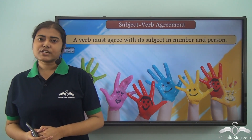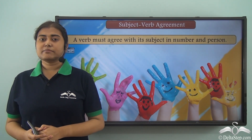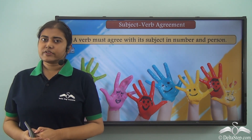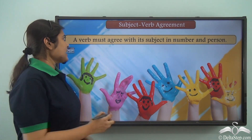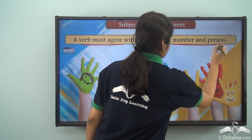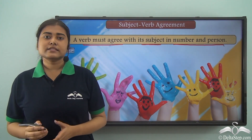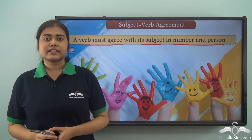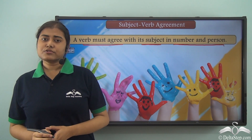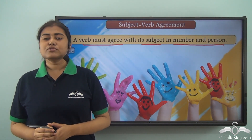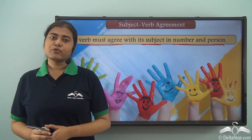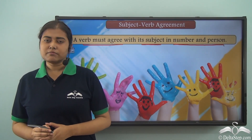We have already learned what a subject is and about some rules related to subject-verb agreement. A verb must agree with its subject in number and person. The basic rule is that singular subjects need a singular verb whereas plural subjects need a plural verb. We also learned that uncountable nouns always take a singular verb. Today let us learn about some more rules related to subject-verb agreement.